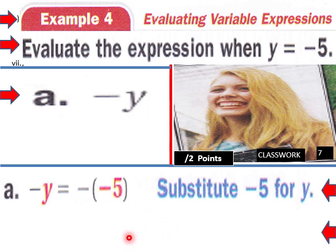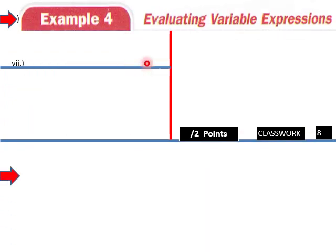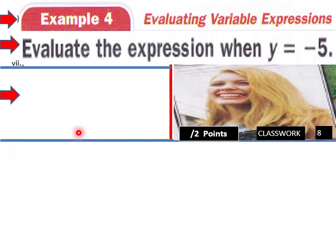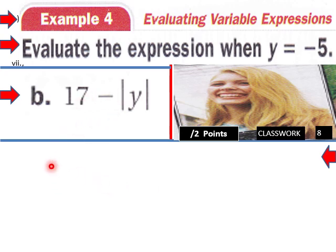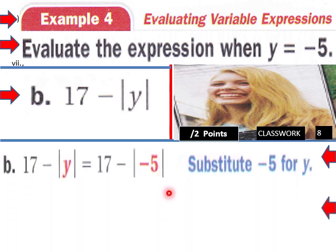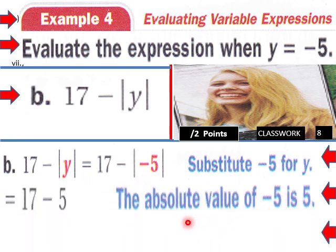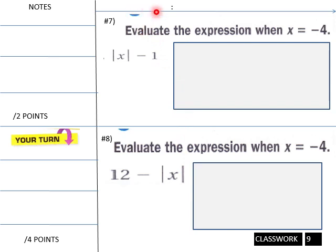A negative sign is another way of saying 'the opposite of.' Let's try another one. Evaluate the expression 17 minus the absolute value of y, when y equals negative 5. Our setup is 17 minus the absolute value of negative 5. The absolute value of negative 5 is 5, so 17 minus 5 equals 12.